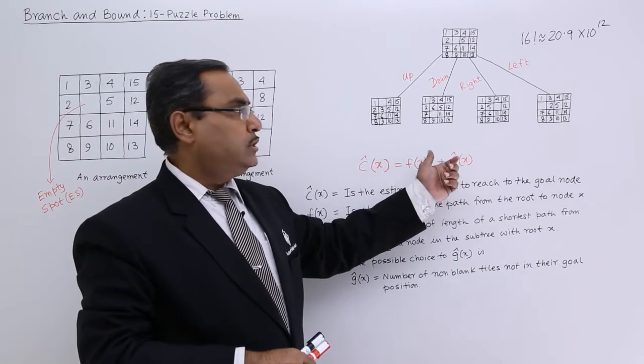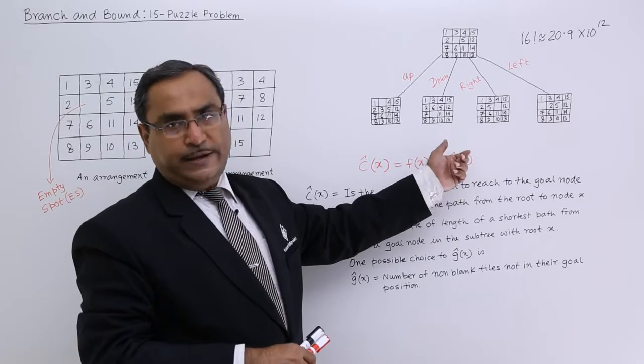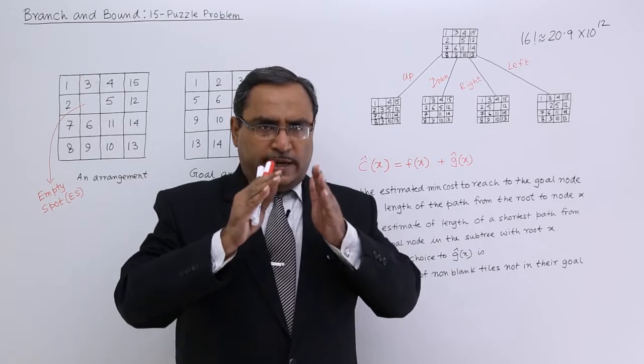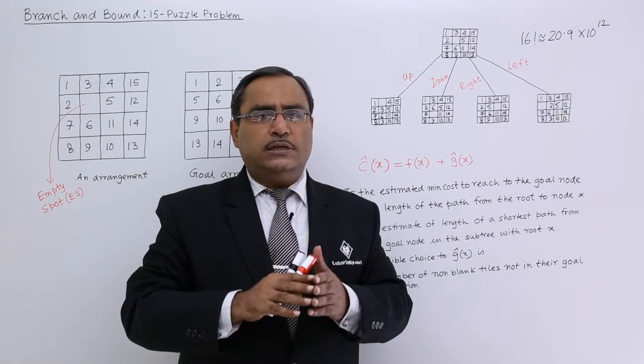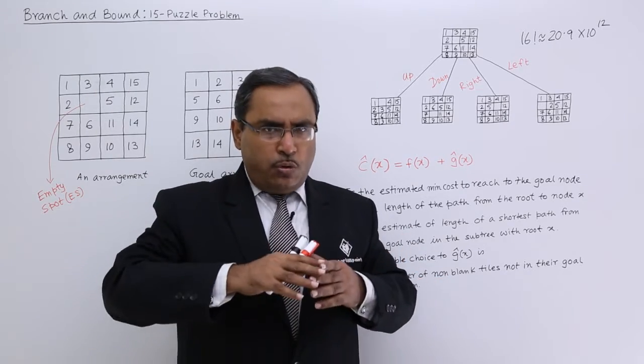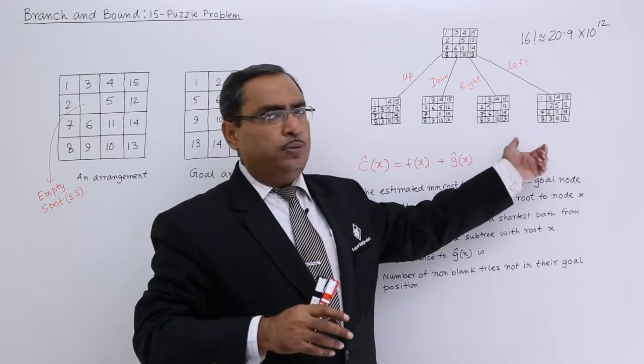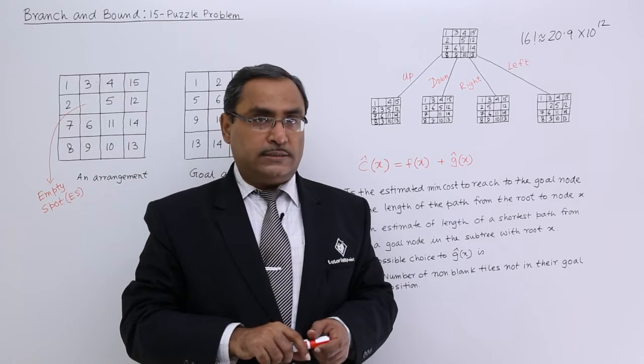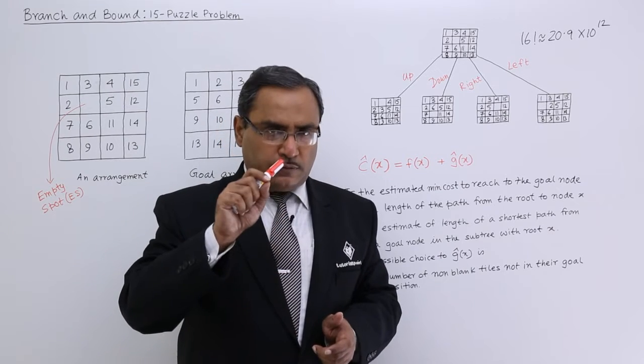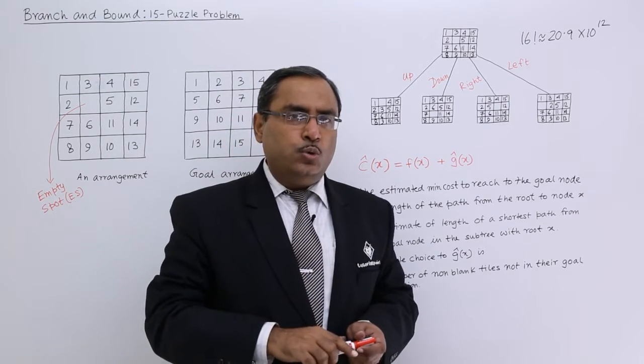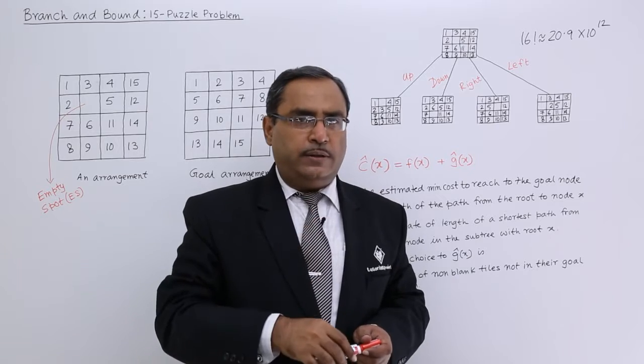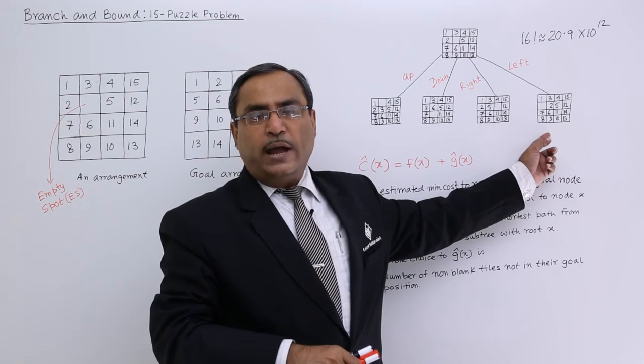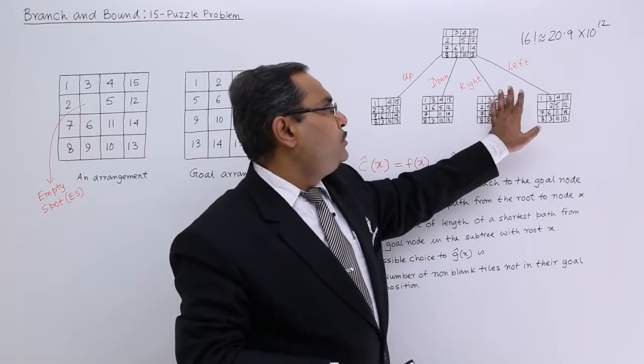The state space will be considering so many different board positions, and to get the goal node will be a problem for us. So to solve this particular problem, we should apply some heuristic so that we should not branch all the possible board arrangements. We should bound some of them.